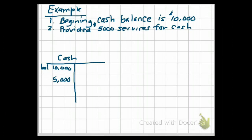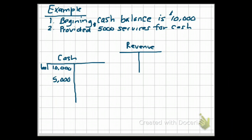Now we look at the other side. We provided services for cash, and whenever we provide goods and services, we call that revenue. So the other account affected by this transaction is revenue. Do we put this on a debit or a credit? From your mnemonic, revenue is on the credit side. Did our revenue increase or decrease? It increased because we provided $5,000 of services. Therefore, if revenue increased, it goes on the credit side.